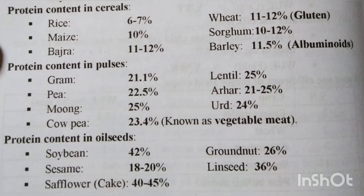तो cereals में कितना था: 6, 7, 11, 12 इस टाइप से। Pulses में: 21, 22, 25, 24। Protein in oil seeds में: 18-20, 36, 26, 42, 40-45. ठीक है, तो यह एक round off हो गया। So that's all for today — I hope you liked the video.